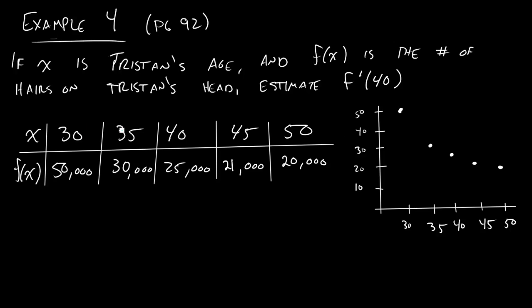We're going to do this the way you're required to do it in your webwork. We're going to get two estimates for the average rate of change at 40. So first we'll do the average change between x equals 35 and x equals 40. We'll also do the average change between x equals 40 and x equals 45.